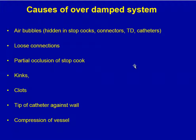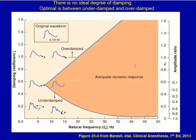Some things that can cause an over-damped system include air bubbles, loose connections, partial occlusion, kinks, clots, the tip of the catheter against the wall, and compression of the vessel.